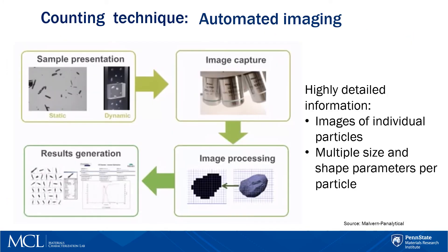Automated imaging is a counting technique where individual particles are measured by a microscope that automatically scans a large enough area to get a statistically valid distribution — for example, a few thousand particles. It gives highly detailed information of size and shape, and it is not biased by the choice of model as in the case of ensemble techniques.